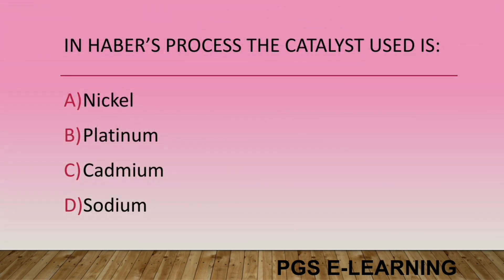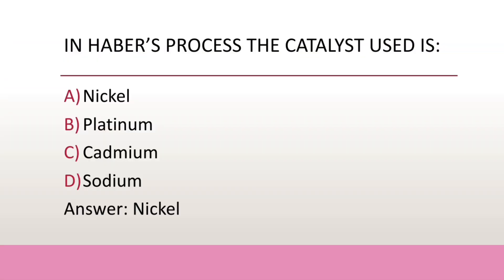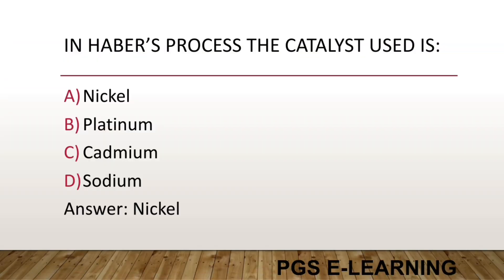In Haber's process, the catalyst used is: Option A, nickel. Option B, platinum. Option C, cadmium. Option D, sodium. Correct answer is nickel.